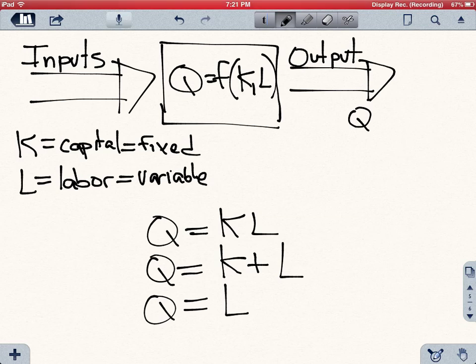We could say that in general this visual process of production that we introduce is going to have the general mathematical function of output being a function of the two inputs we'll use, two types of inputs, capital and labor. And that's the simplest way in which we can start understanding how production works.